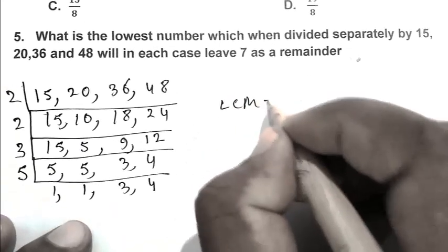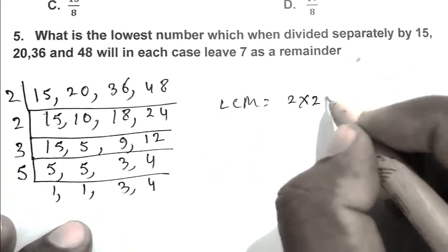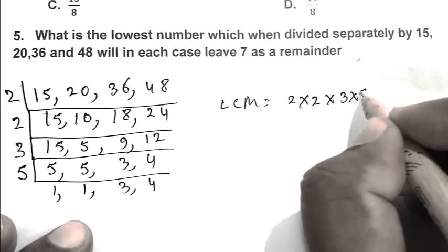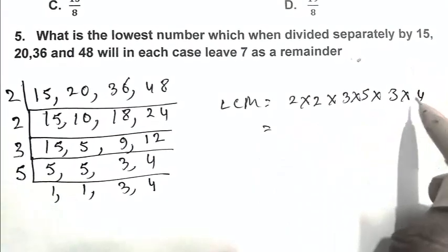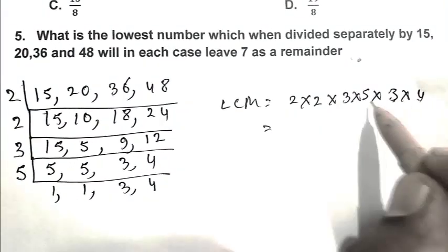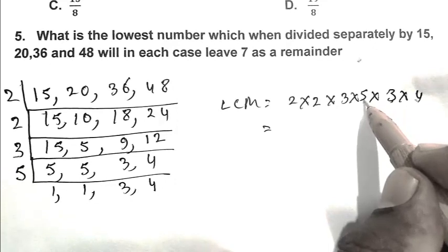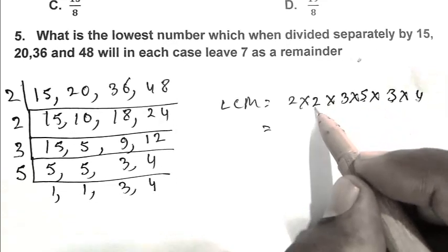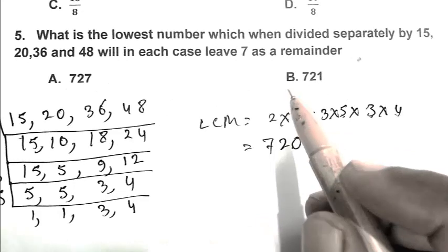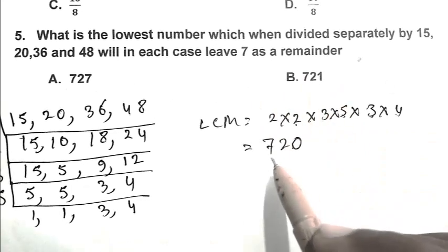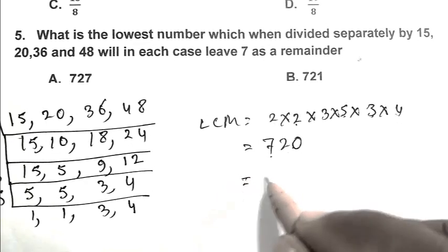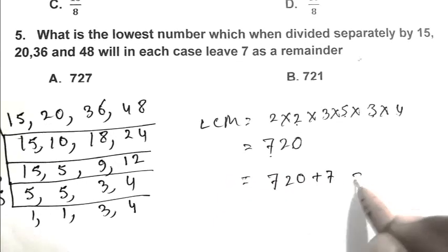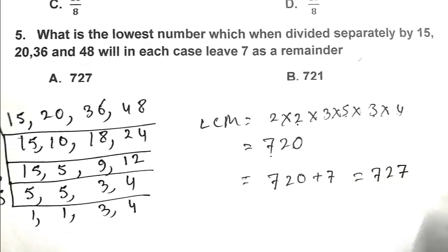So LCM is 2 multiplied by 2 multiplied by 3 multiplied by 5 multiplied by 3 multiplied by 4, which equals 720. Adding 7 to 720 gives 727. A is the right answer.